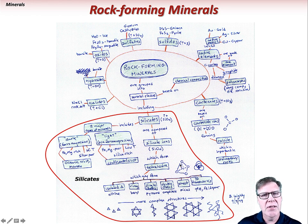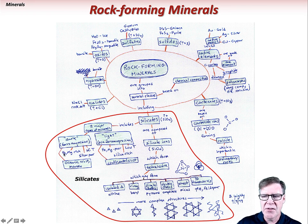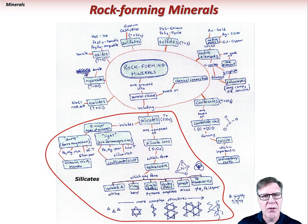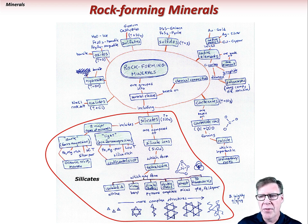Drawing the silicon tetrahedron is somewhat important — a crude but effective drawing suffices. I added more information about silicate minerals: the lighter, non-ferromagnesian minerals lack iron, magnesium, and calcium. They have other elements like potassium, sodium, and aluminum, and they occur more in the continental crust.